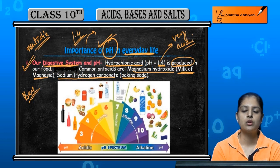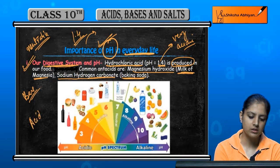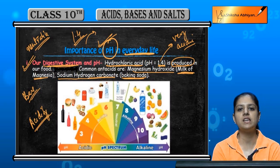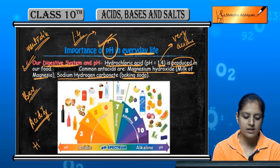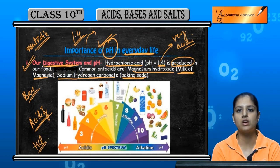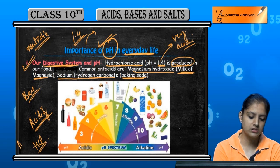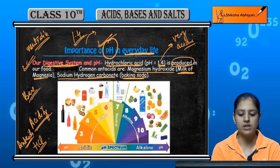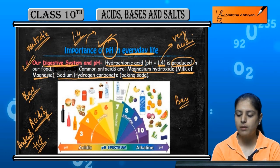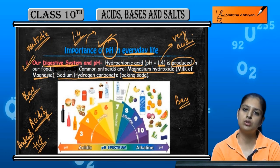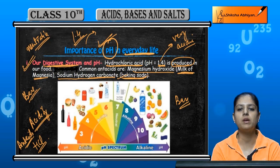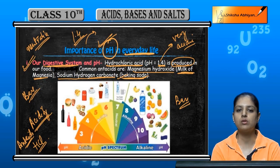You might have heard of the term acidity. People suffer from acidity — that means the amount of acid production has increased and the amount of HCl production has increased. So we use antacids to balance it. Antacid is basically a base. We use it to neutralize the acid and restore balance.